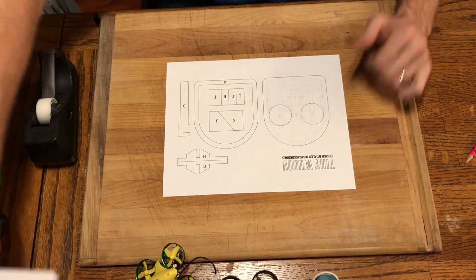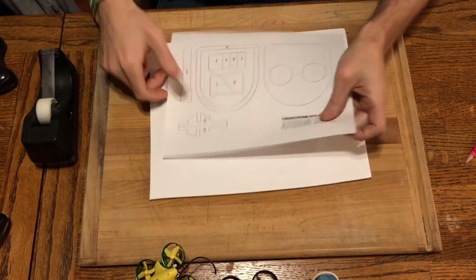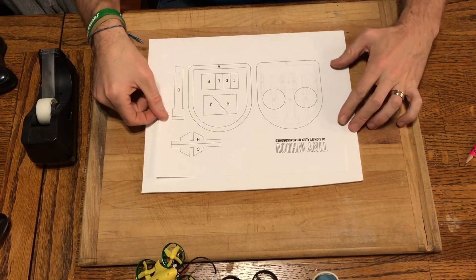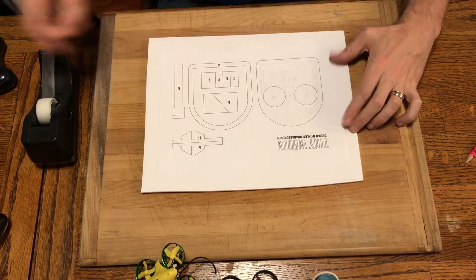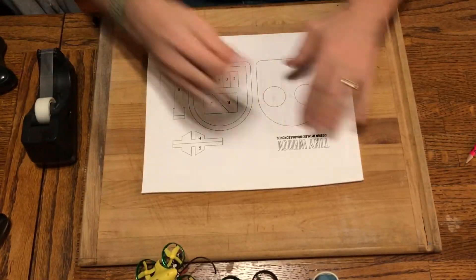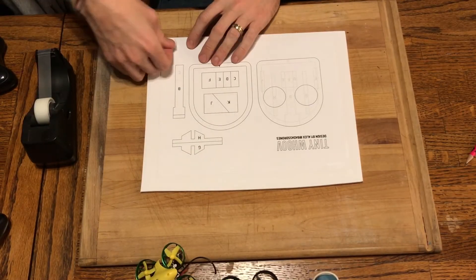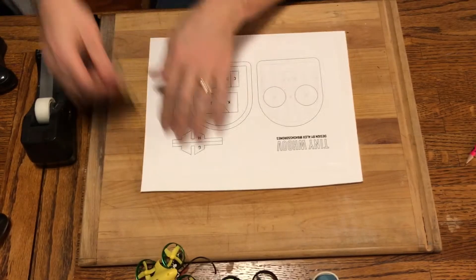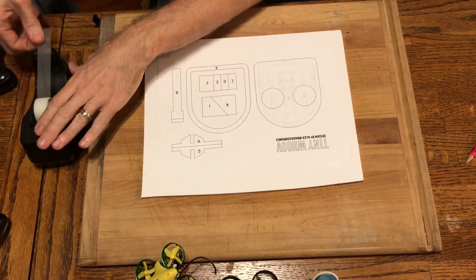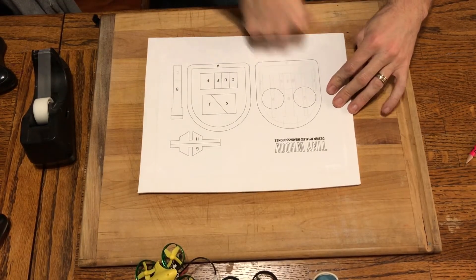Okay. So we've got our plans here and we've got our sheet of foam board. And the first thing we want to do here is to keep our stuff from moving around. We're going to grab just a little bit of tape, throw it in each corner of our foam board. So we can trace this on there.